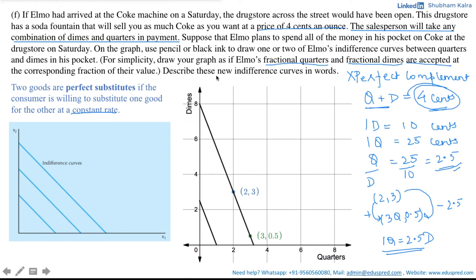Now, the question also says, describe these new indifference curves in words. One way to describe them is that they are in straight line. But if I describe them like that, then any person would say, are these your indifference curves? Or are these your indifference curves? Or is your indifference curve taking this shape? So, for that, we need to specify the slope of the indifference curve. Now, what do you mean by that?